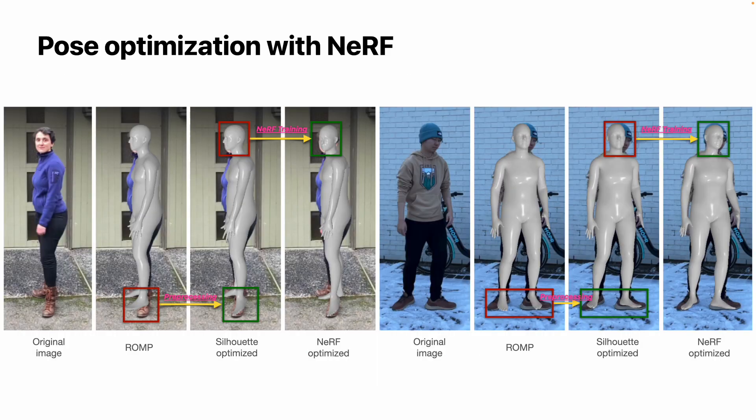We use color supervision together with many regularizations to train the human NeRF model. We also jointly optimize the SMPL poses during training. As shown in the examples here, the left is the original image, the middle left is the SMPL estimates from ROMP, the middle right is the pre-processed SMPL estimates using silhouettes, and the image on the right is the NeRF-optimized poses. Color supervision helps to correct the head orientation in these two examples.